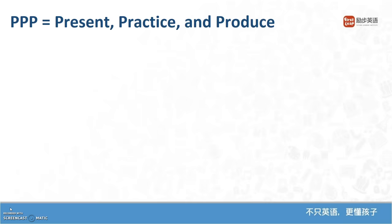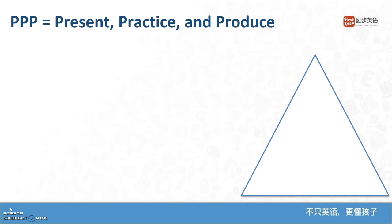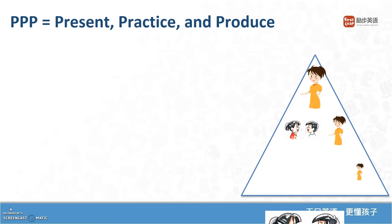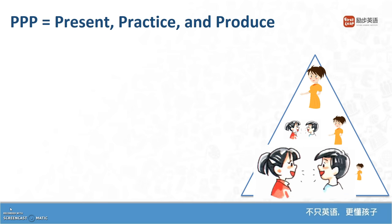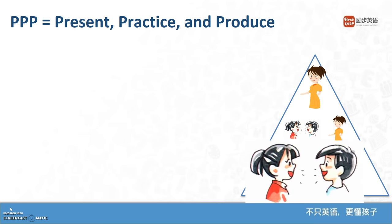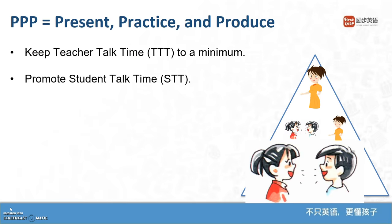What can teachers do to enhance the value of the Present, Practice, and Produce system of instruction? One resource discussing PPP shows it as a triangle to emphasize change from the teacher speaking the most during presentation, as indicated in the upper part of the triangle, to the teacher offering guidance during practice while also providing plenty of opportunity for students to engage in speaking, to then the students doing most of the talking to produce the language, with the teacher only speaking when necessary. This emphasizes one of the goals of PPP: to reduce teacher talk time and increase student talk time.